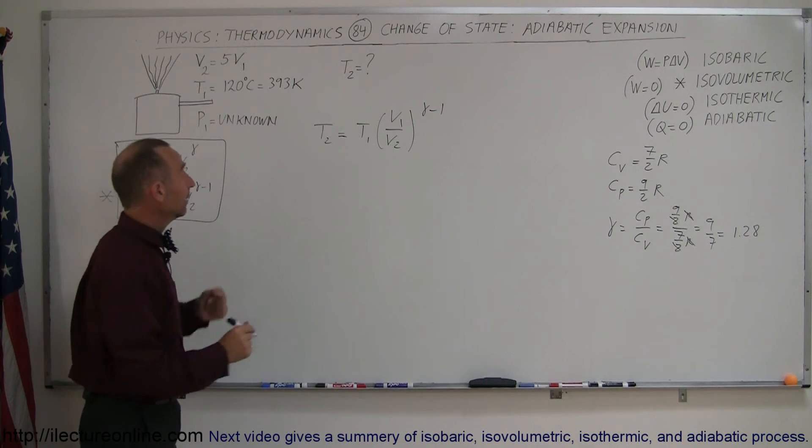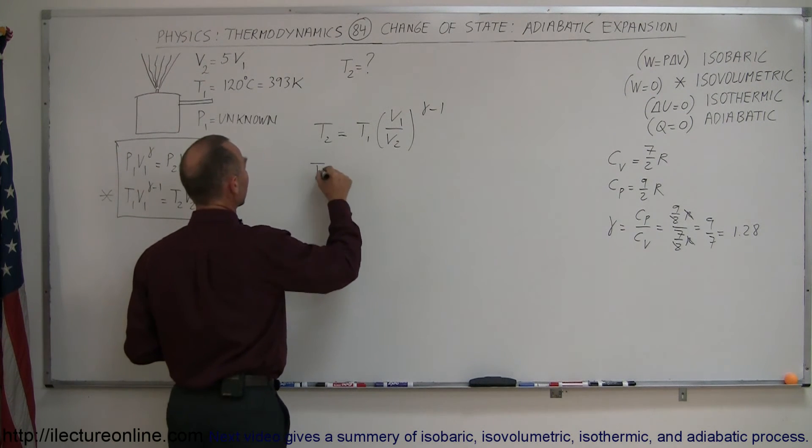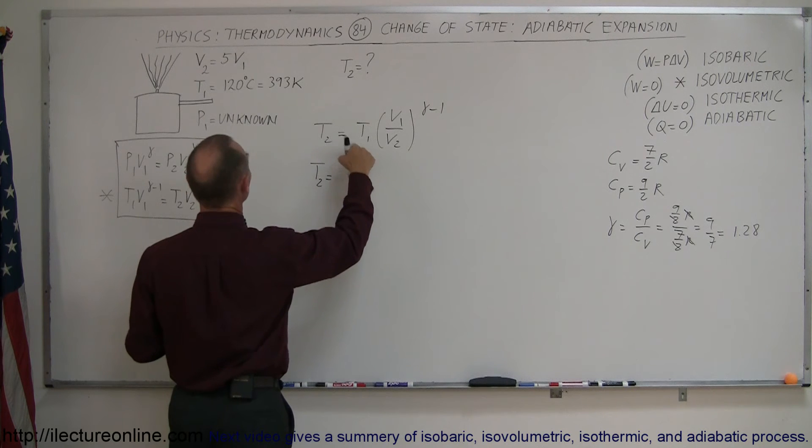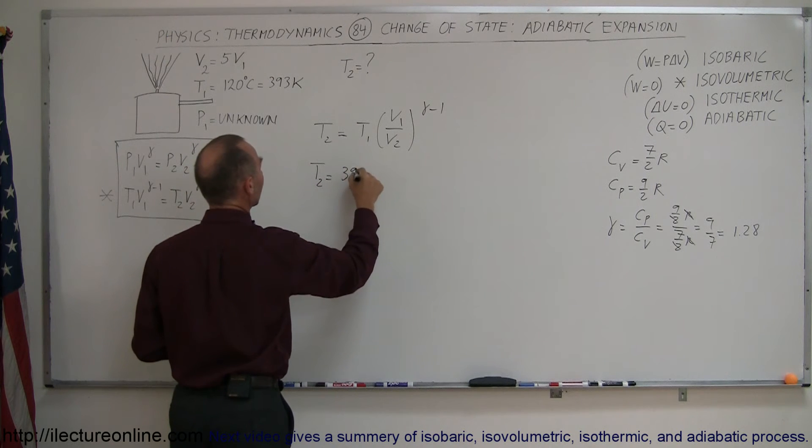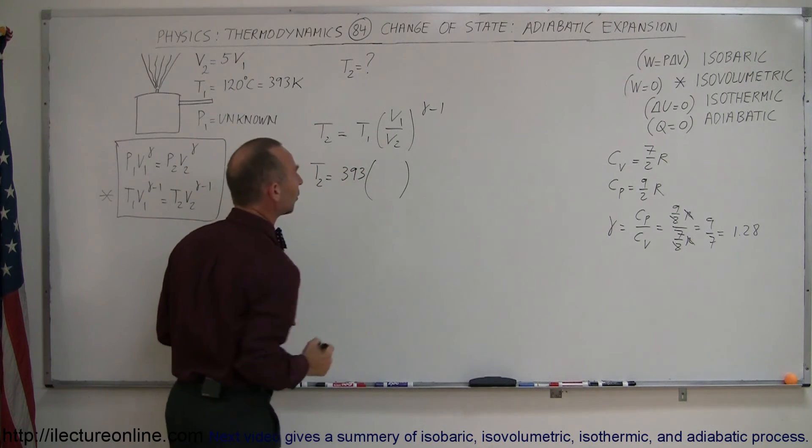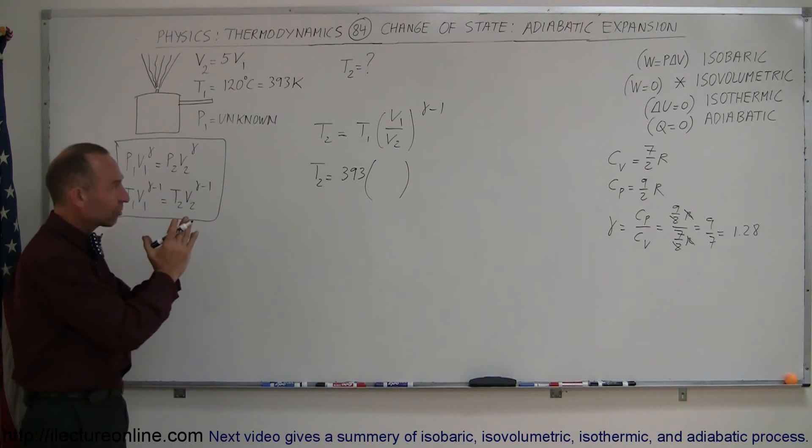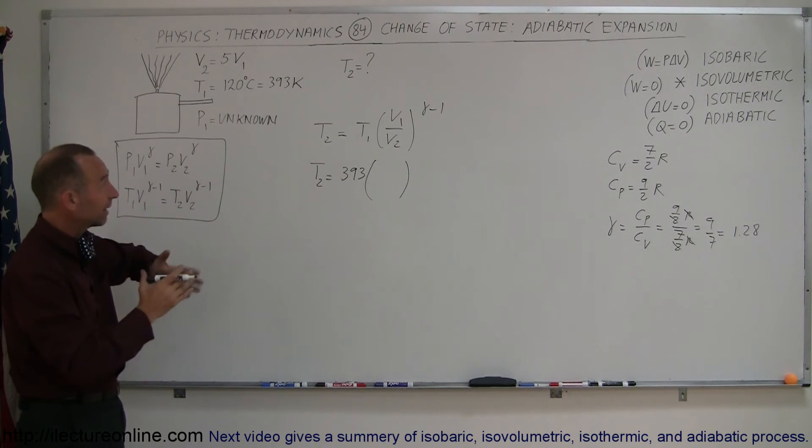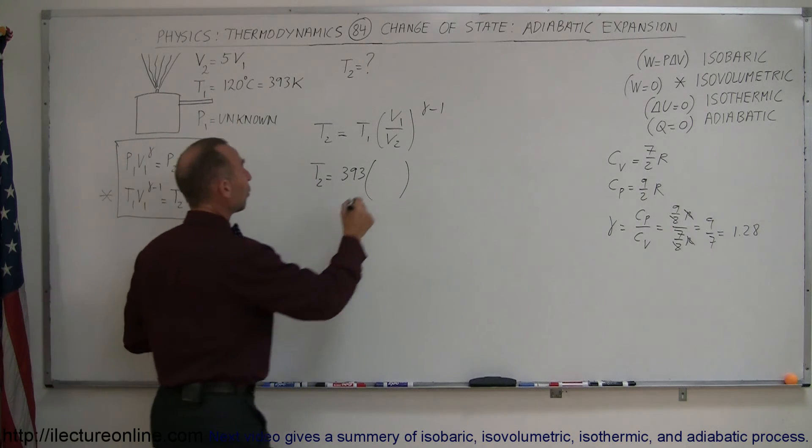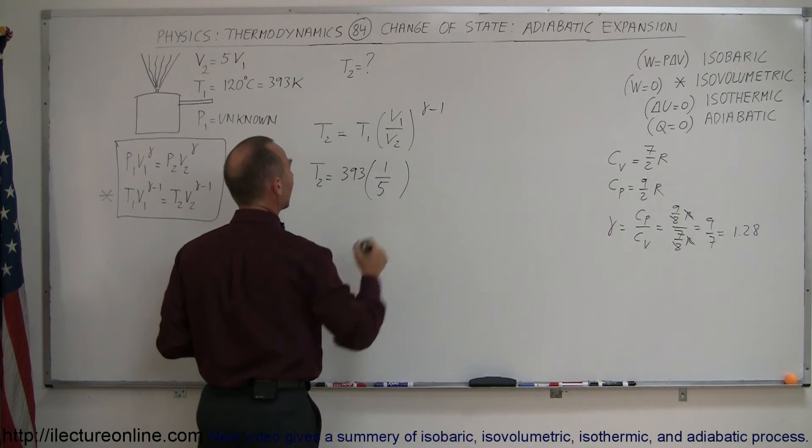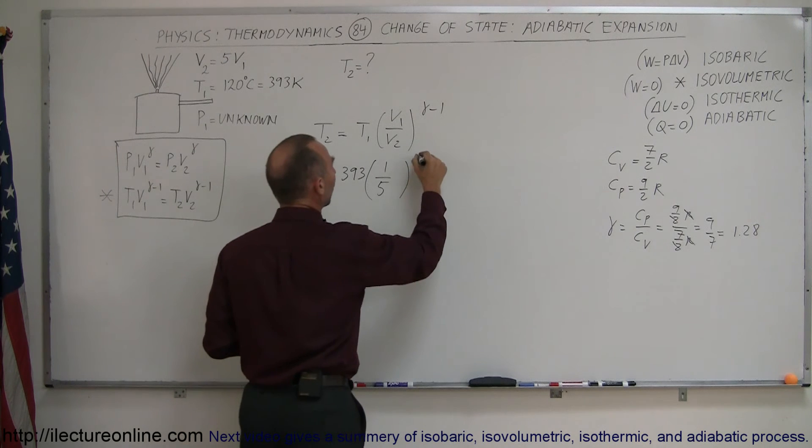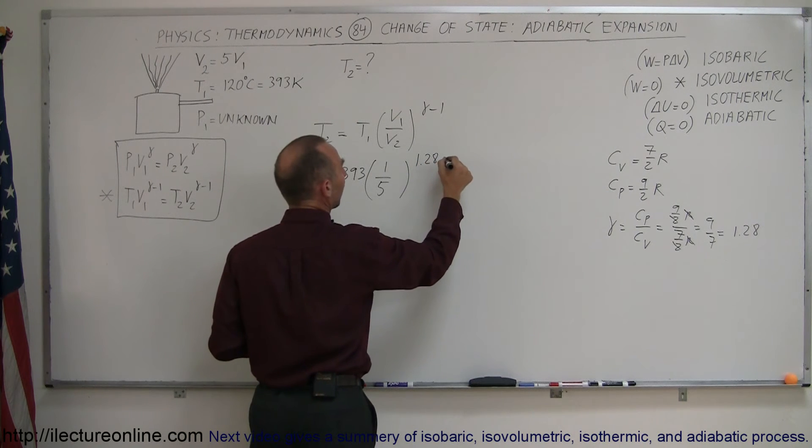now plugging that in, we get T₂, final temperature is equal to the initial temperature which we've set was 393 Kelvin times the ratio of the initial volume to the final volume, and of course initially the gas is compressed, it's a small volume, finally it's expanded, so it's a 1 to 5 ratio in our example,